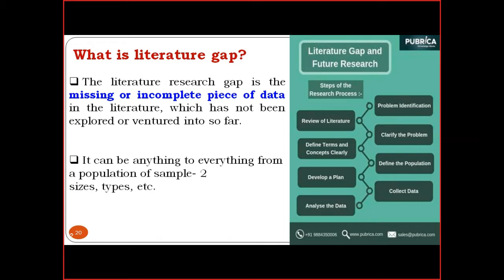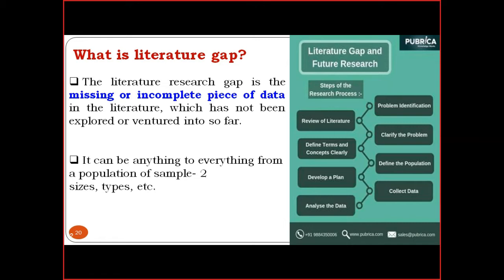There are minimum two types and two methodologies with various types of data. Regarding literature gap and future research, the steps are: problem identification, review of literature, clarity of the problem, clearly defining terms and concepts, defining the population, developing a plan, collecting the data, and analysis of the data. These are the general steps for literature gap and future research.